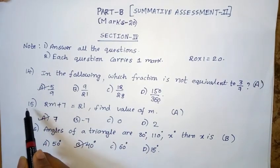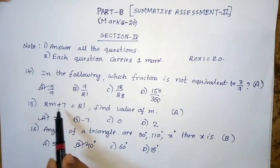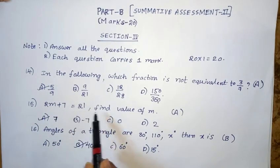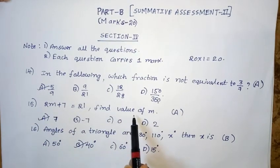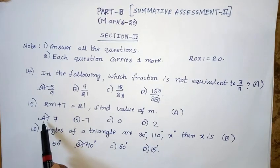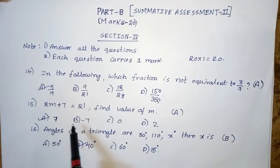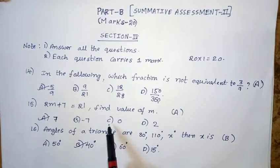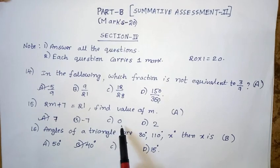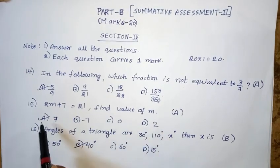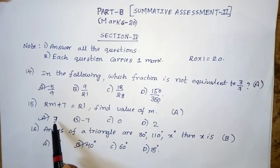Fifteenth question: 2M plus 7 equals 21. Find the value of M. Option A: 7. Option B: minus 7. Option C: 0. Option D: 2. Option A — 7 — is the right answer.